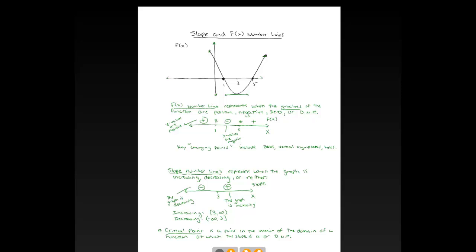As we get into more specific examples I'll draw your attention to those, and I may do another video going through this process. The bottom line is we have two types of number lines: an f(x) number line and a slope number line, and you want to make sure you understand what ideas each one extracts from the graph.